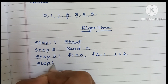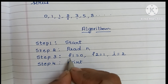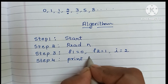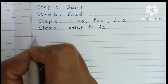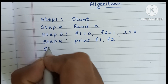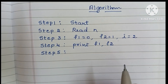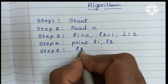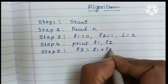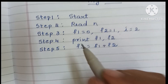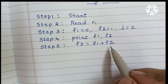Step 4: print the first two numbers, f1 and f2. Step 5: find f3 using the formula f3 equals f1 plus f2. To find the third number we add the first two numbers, f1 plus f2.